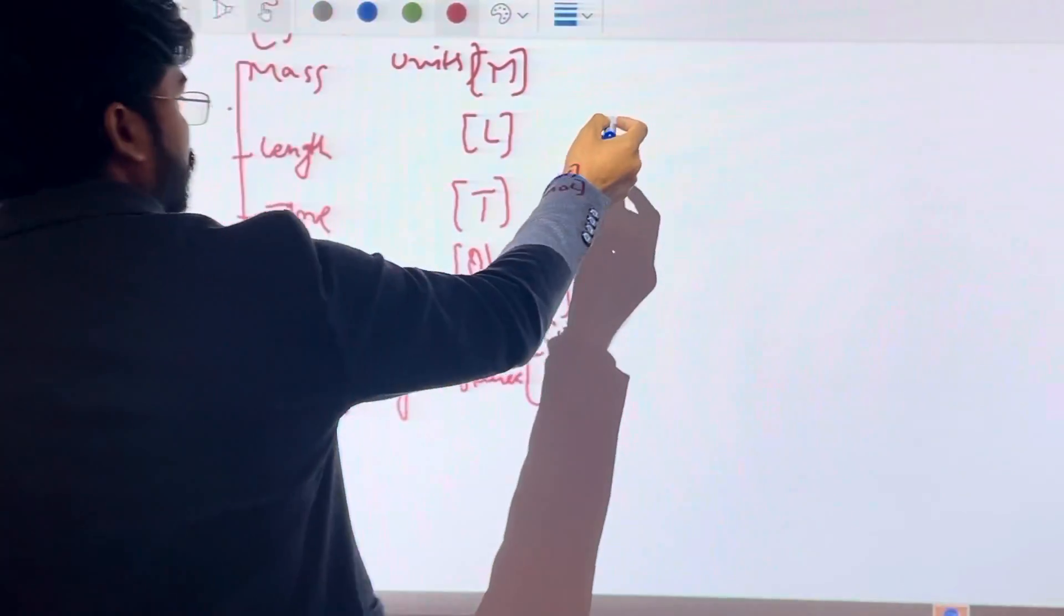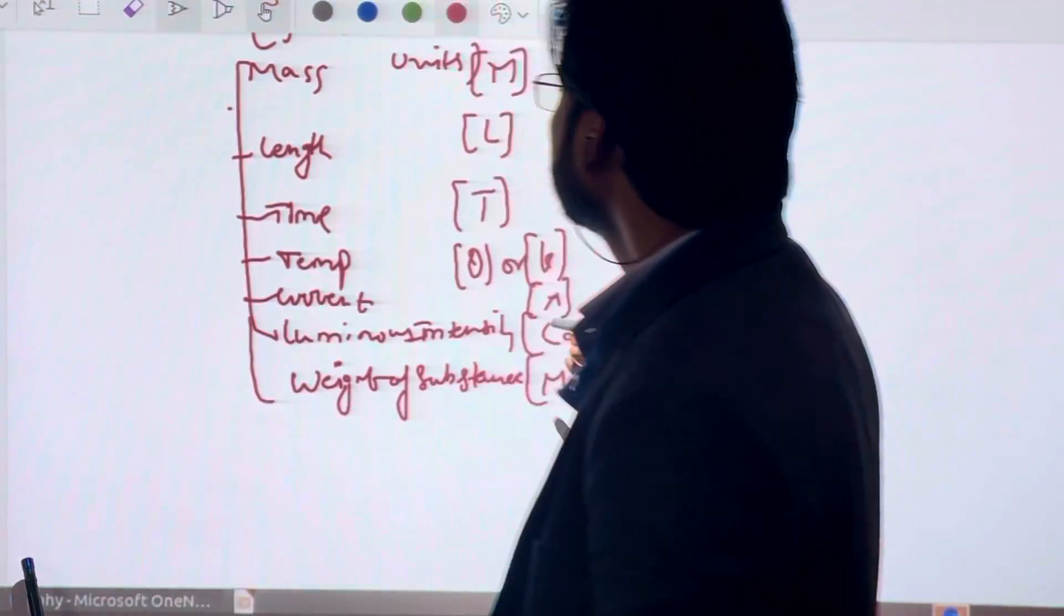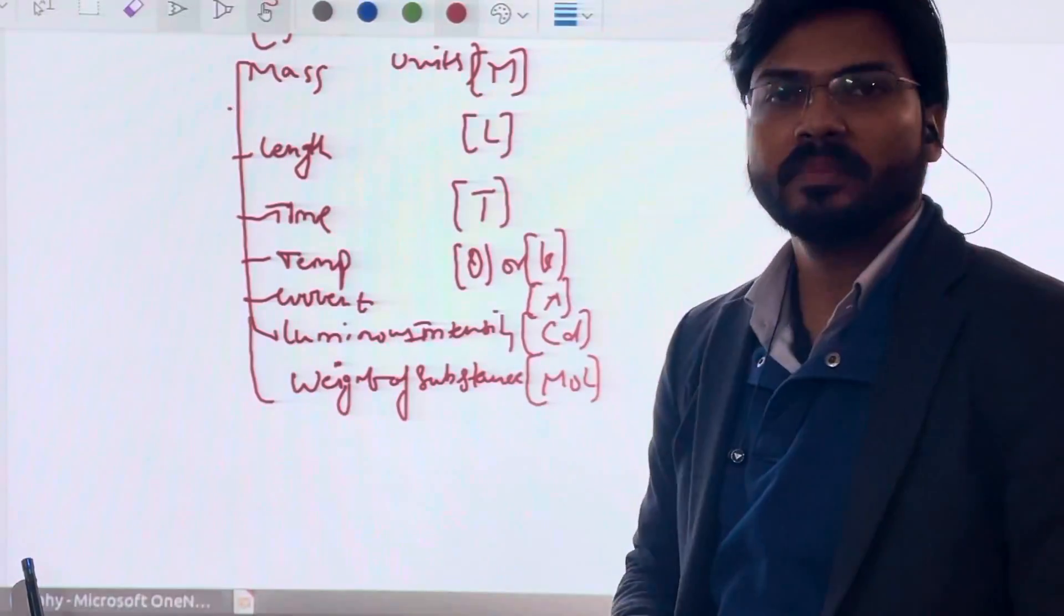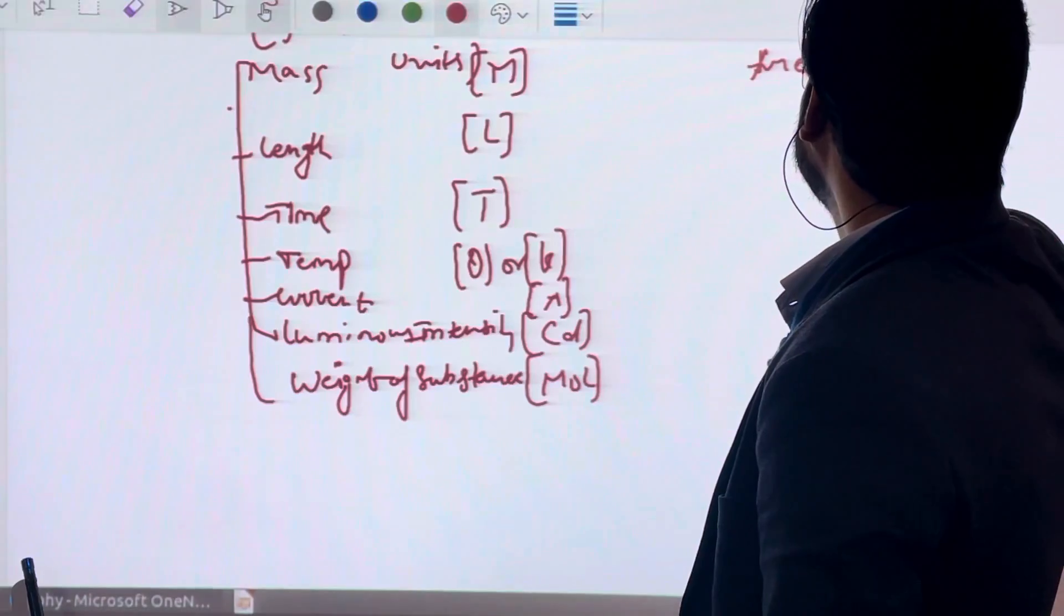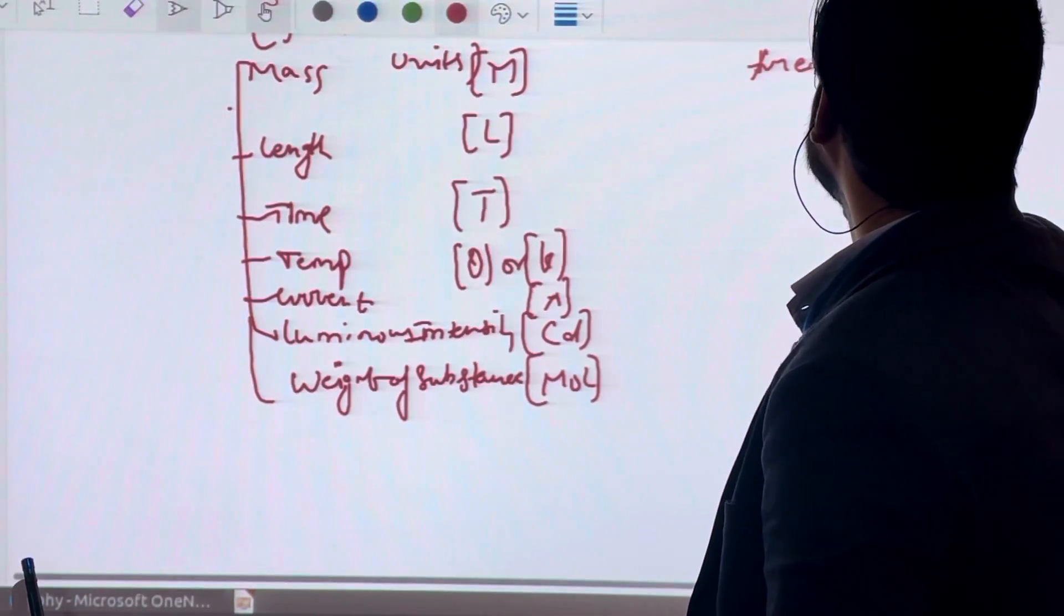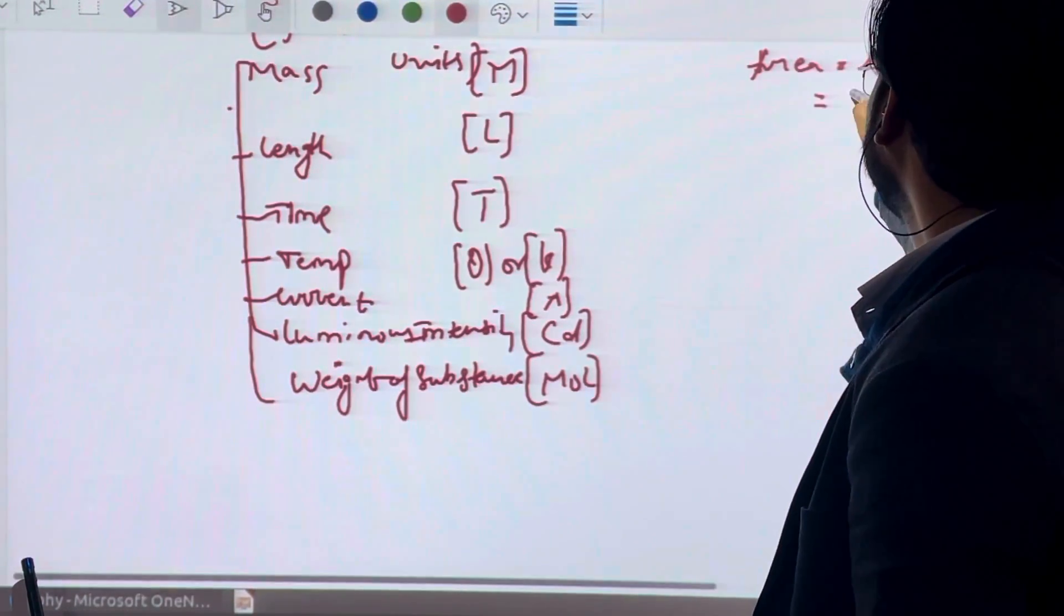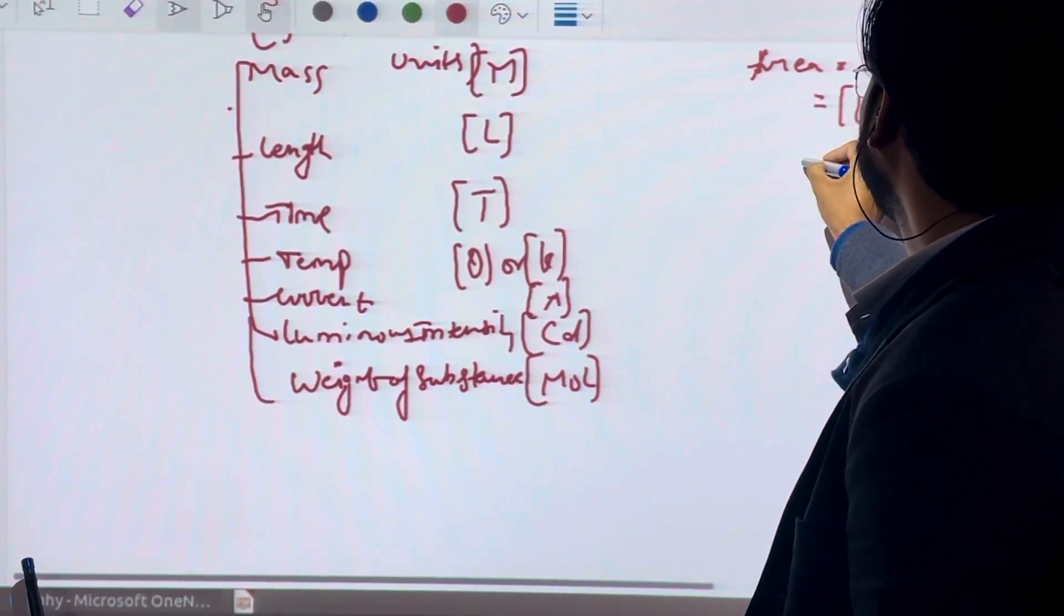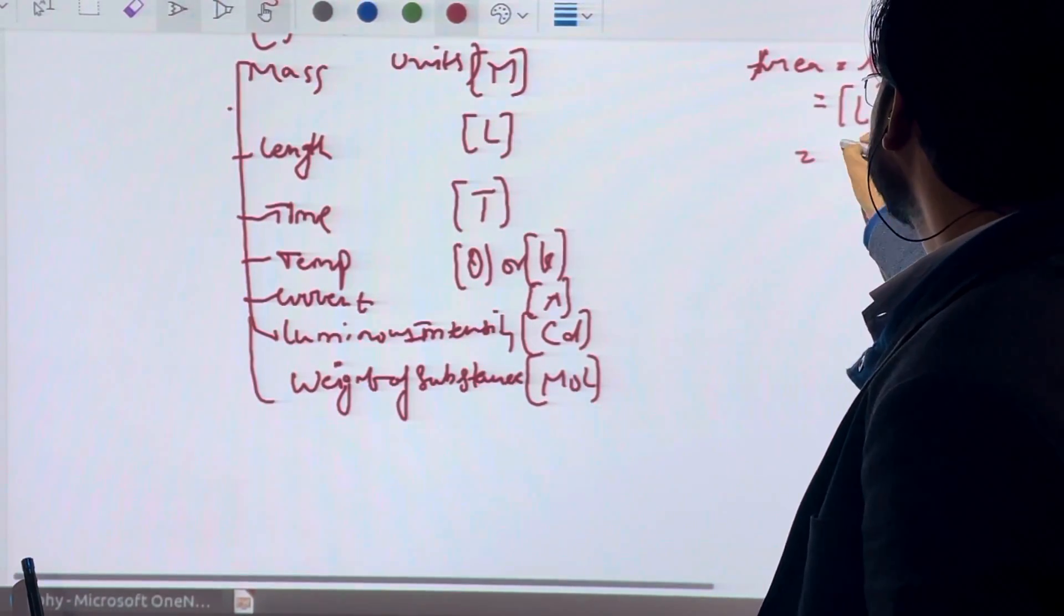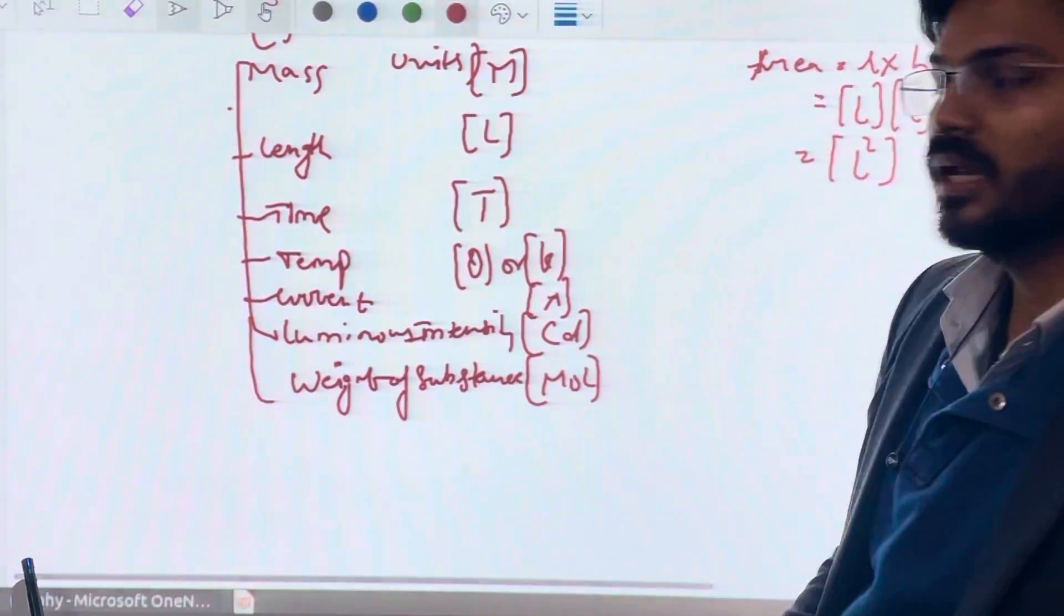Derived units are those units which form using basic units. For example, area is length into breadth. Length is L and breadth is also dimension L, so L squared is the dimension of area.